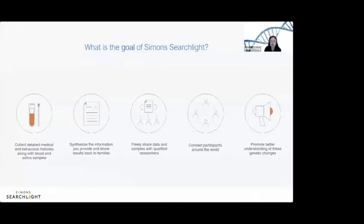We created Simon Searchlight a little over 10 years ago to bring together family groups that had rare neurogenetic conditions, associated in some cases with autism. We're doing this to provide what we call the natural history — understanding what this condition is, how it changes over the life course, and understanding the breadth of what we see — with the hopes that by sharing information we can support each other and figure out best practices.